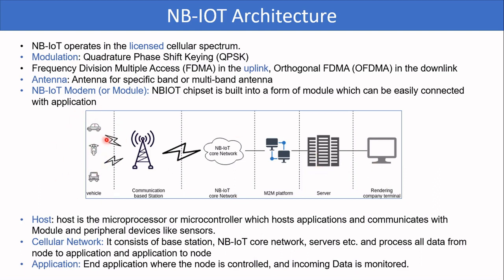All end nodes are fitted with an NB-IoT module. All NB-IoT modules have an NB-IoT chipset and a SIM with unique identifiers, so all modules are unique just like our mobile phones. This module is fitted with an antenna to extend its communication range — its function is to communicate with the base station and transmit and receive signals from the host. The host is a microprocessor or microcontroller which hosts the application and communicates with the module and peripheral devices like sensors. The host controls the end node — for example, in case of a smart light, the host switches the light on and off; in case of an energy meter, the host measures the energy consumption.